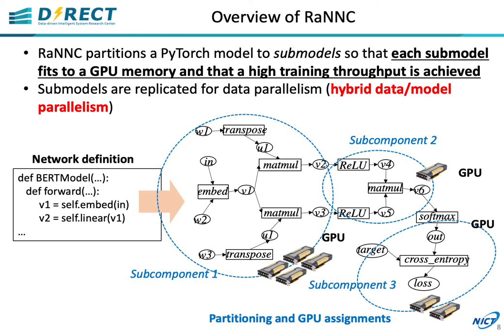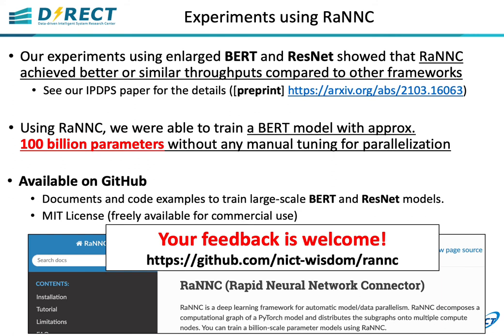Our experiments using EnlargedBART and ResNet showed that RANK achieved better or similar throughputs compared to other frameworks. Using RANK, we were able to train a BART model with approximately 100 billion parameters without any manual tuning for parallelization. RANK is now available on GitHub with examples of large-scale model training. Thank you for watching this video.